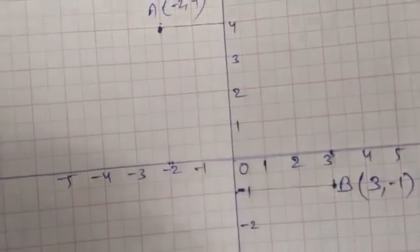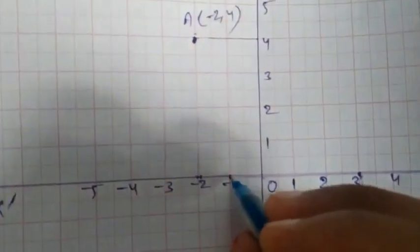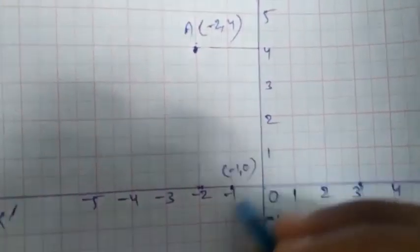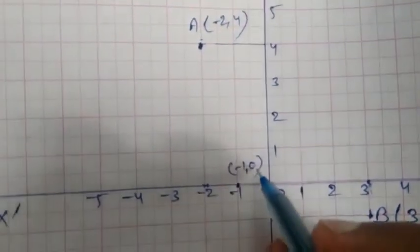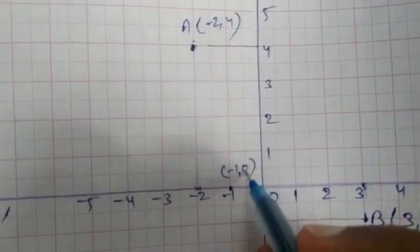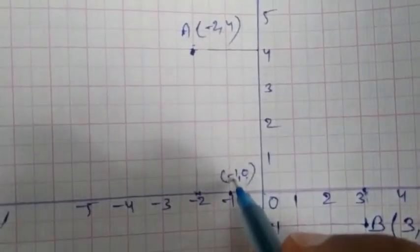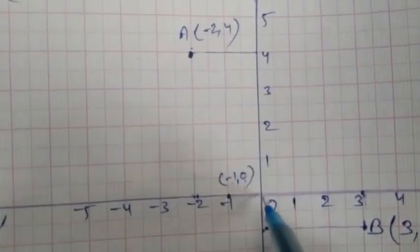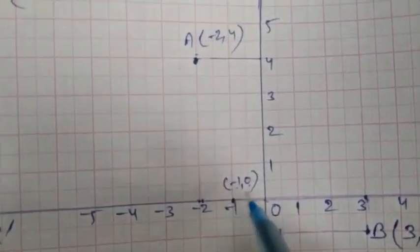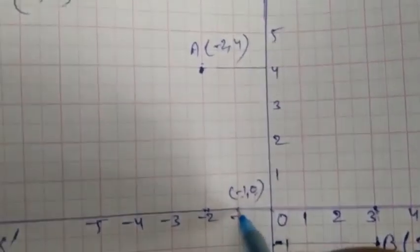The third point is minus 1 comma 0. Since the y-coordinate is zero, this point lies on the x-axis. Take one unit in the negative direction from the origin on the x-axis. So minus 1 comma 0 lies on the x-axis at that position.